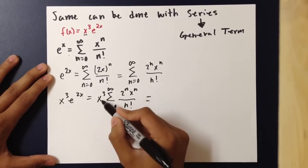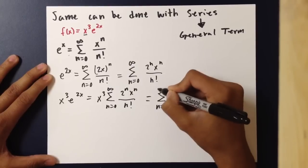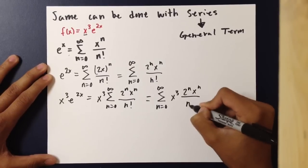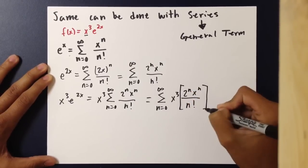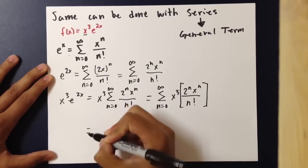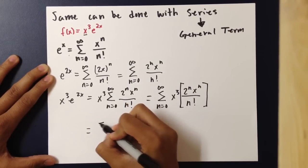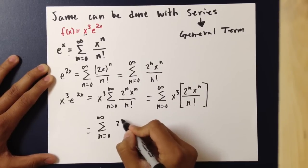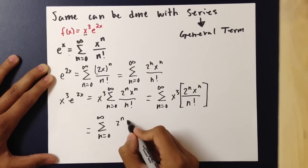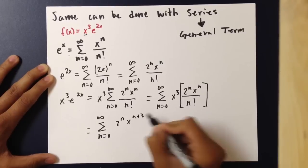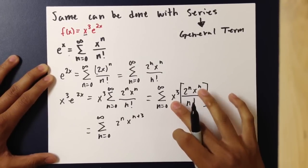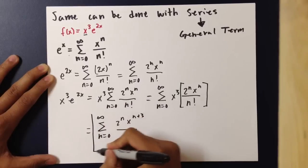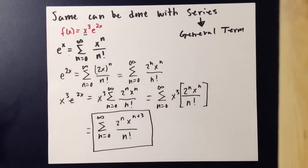Knowing that, x cubed can go inside the summation and become x cubed times 2 to the n times x to the n over n factorial. From there, we simplify. This becomes the summation from n equals 0 to infinity of 2 to the n times x to the n plus 3, because when you multiply with the same base the exponents add, over n factorial. And that is the series with manipulation.